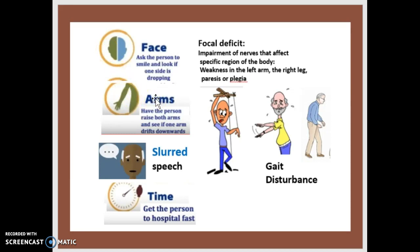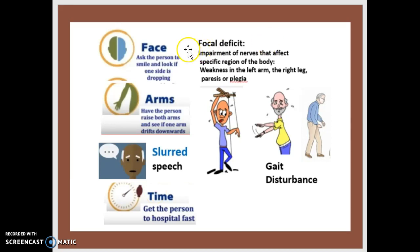For the Arms test, have the person raise both arms and see if one arm drifts downward — if one is lower than the other, that's another sign. If their Speech is slurred, that is another sign. Time means get the person to the hospital as fast as possible — it's very urgent.